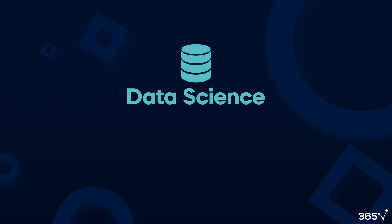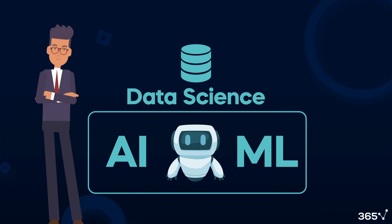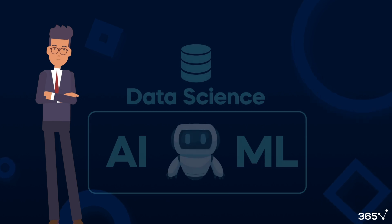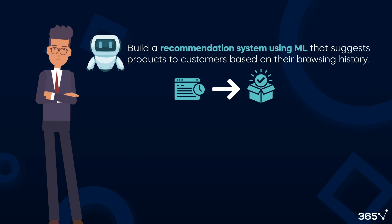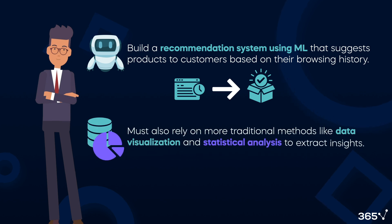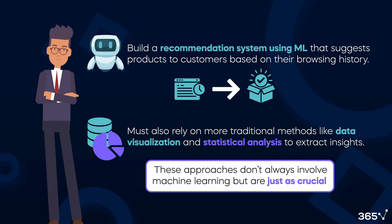And how does data science fit into the picture? AI and machine learning are an essential part of data science. Every data scientist worth their salt must be able to work with machine learning algorithms. For example, they might use ML techniques to build a recommendation system that suggests products to customers based on their browsing history. However, data scientists must also rely on more traditional methods, like data visualization and statistical analysis to extract insights. These approaches don't always involve machine learning, but are just as crucial for understanding data and solving business problems.